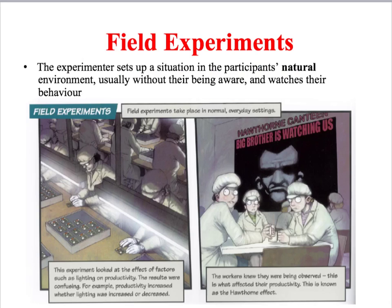Because of the numerous problems highlighted, when sociologists do choose to carry out experiments they're normally outside of the laboratory. Such experiments are known as field experiments, and they involve the sociologist intervening in the social world in such a way that hypotheses can be tested by isolating particular variables. Normally in a field experiment, the researcher will seek to change a particular aspect of their participants' natural environment in order to measure the effect.